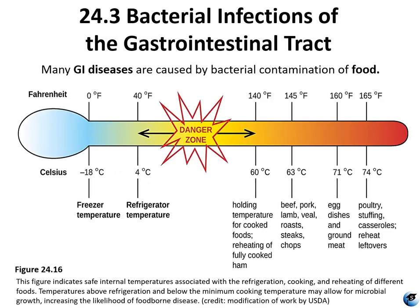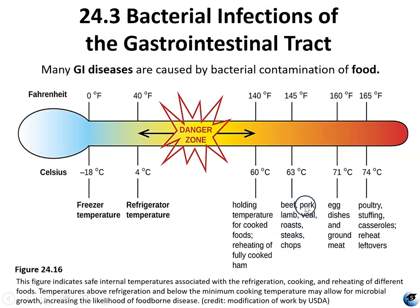Figure 24.16 emphasizes that so many GI diseases are caused by food poisoning, and shows a schematic of safe and unsafe temperatures for storing and cooking food. Lower temperatures from about negative 20 to 4 degrees Celsius are good for food storage — freezer and refrigerator temperatures. Safe cooking temperatures vary by food: holding cooked food requires about 60°C, red meats should be cooked to at least 63°C, eggs need at least 71°C, and poultry — including reheating leftover turkey or stuffing — needs to reach at least 165°F or 74°C to prevent food poisoning.